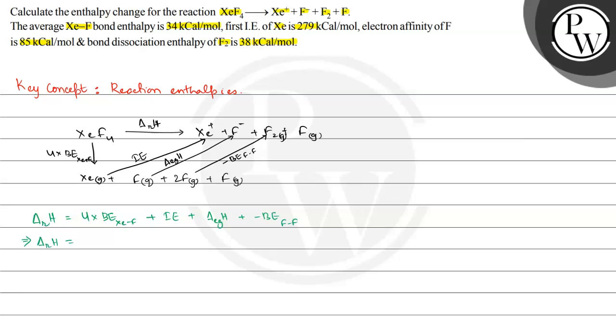This is equal to 4 multiplied by 34 plus ionization enthalpy of Xe is 279 plus electron gain enthalpy. Now we know electron gain enthalpy is equal to minus of electron affinity, and electron affinity here is 85 kilocalorie. So this will be plus minus 85 and here is bond enthalpy of F2, so this is minus 38. And this is equal to 292 kilocalorie per mole.